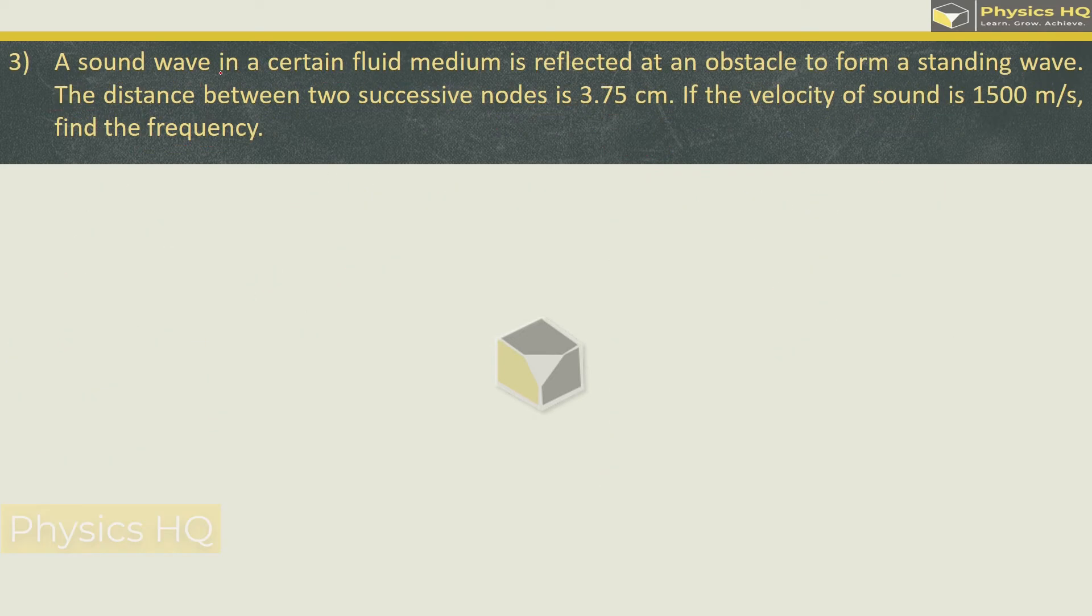Let us check out the next example. A sound wave in a certain fluid medium is reflected at an obstacle to form a standing wave. The distance between two successive nodes is 3.75 centimeter. If the velocity of sound is 1500 meter per second, find the frequency. We will use the formula v equals n lambda. Velocity given is 1500 meter per second. And we need to find frequency. So frequency formula is v by lambda. V we have is 1500, lambda we need to find. For that we need to understand the given data and what it means.